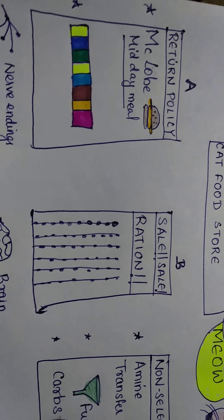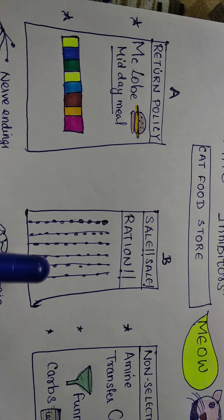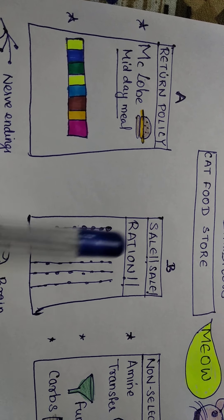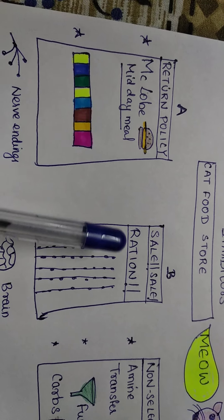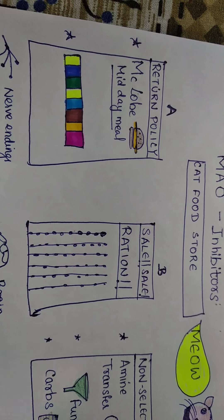Then comes the second section of cat food store. Here, everything is on sale. And they are selling it at the rate of ration price.